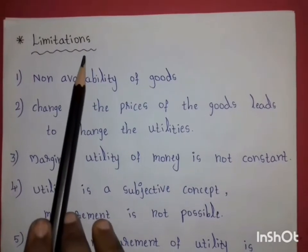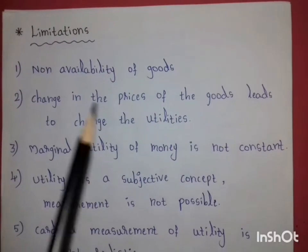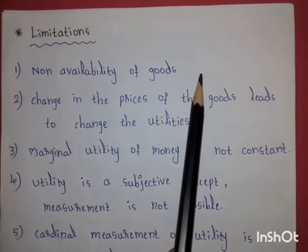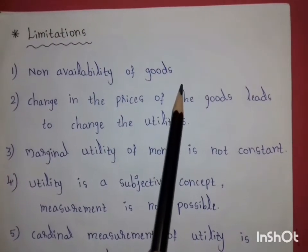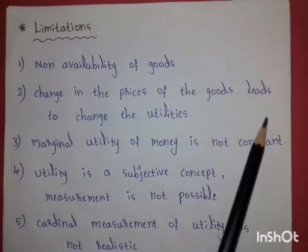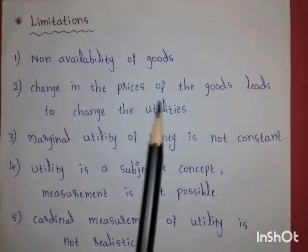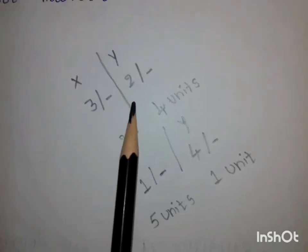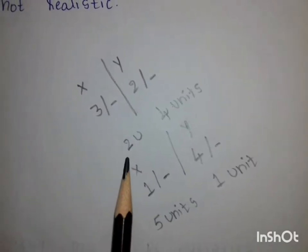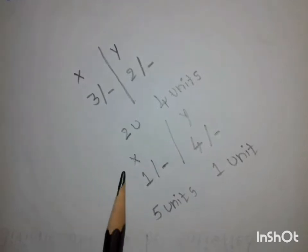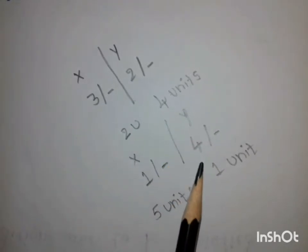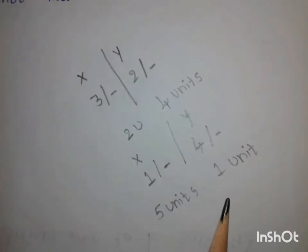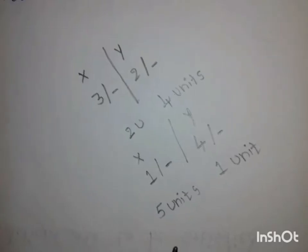Limitations: First, non-availability of goods — if the goods the consumer wants are not available in the market, he cannot achieve maximum satisfaction, so the law is not applicable. Second, change in the price of the goods leads to a change in utilities. For example, if good X costs 3 rupees and good Y costs 2 rupees, the consumer buys 2 units of X and 4 units of Y. But if X falls to 1 rupee and Y rises to 4 rupees, the consumer would buy 5 units of X and 1 unit of Y — price changes alter purchasing decisions.